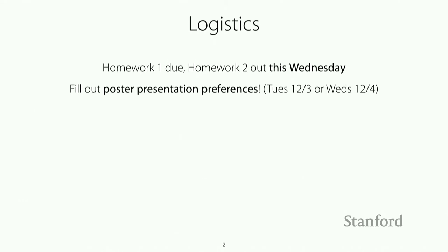I posted a form for you to fill out on the poster preferences — this is the preferences for the date of the poster session. Please fill this out. Last time we checked, only about five people had filled it out. We're trying to schedule a venue for the poster session now, and we have a better venue booked for Tuesday the 3rd, but we want to make sure that people are available that day, because it's not during the normal course session time.